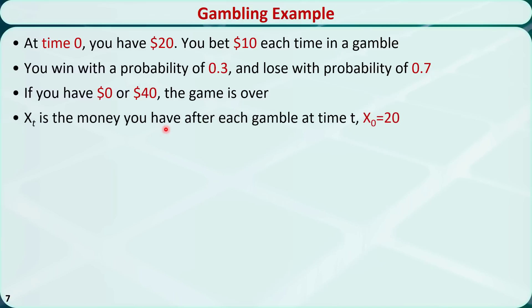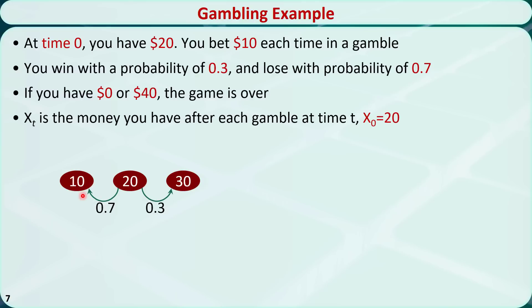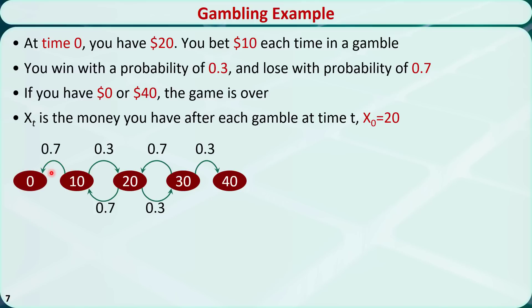We use xt to represent the money you have after each gamble at time t. At the beginning, x_0 equals $20. When you gamble for the first time, there is a 30% chance you will win and have $30 afterwards, and a 70% chance you will lose and have $10. If you have $30 and continue, there is a 30% chance you win and have $40, and a 70% chance you lose and have $20. If you have $10 and continue, there is a 30% chance you win and have $20, and a 70% chance you lose and have $0.